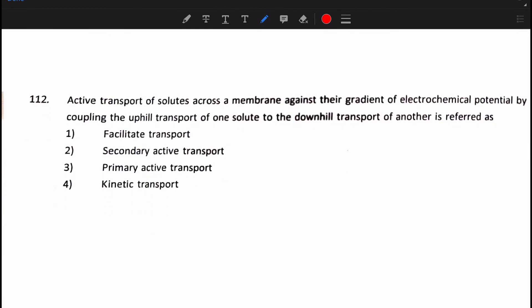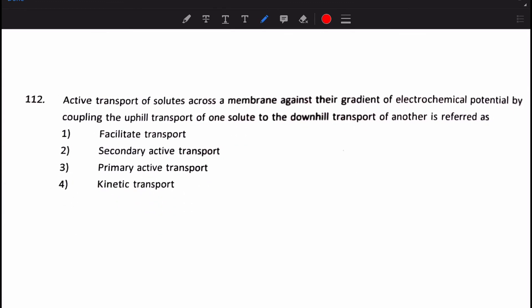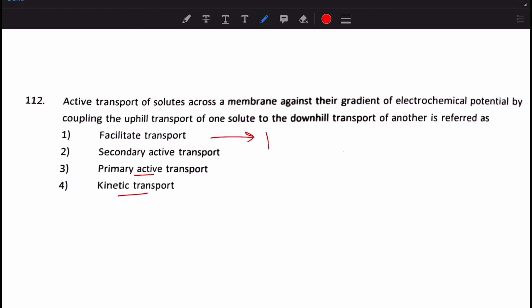Next question. Active transport of solutes across a membrane against their gradient of electrochemical potential by coupling the uphill transport of one solute to the downhill transport of another is referred to as, Is it facilitated transport, secondary active transport, primary active transport, or kinetic transport? Well, facilitated transport is not right because it's passive and not related to active transport. But, secondary active transport is the right answer because secondary active transport's definition is just given in the question. So, here our answer is actually number 2.